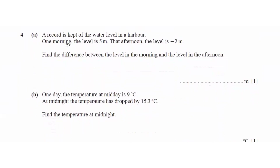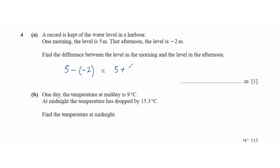Question 4 says a record is kept of the water level in a harbour. One morning the level is 5 metres; that afternoon the level is negative 2 metres. Find the difference between the morning and afternoon levels. So we do 5 minus negative 2. Whenever we're subtracting a negative integer from a positive integer, it becomes plus. So 5 plus 2, which is 7 metres.